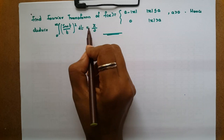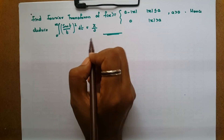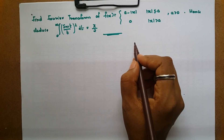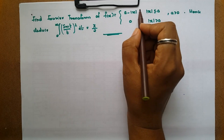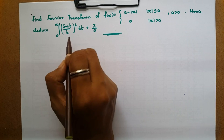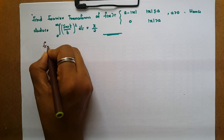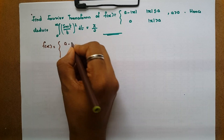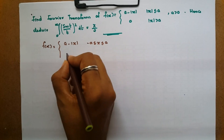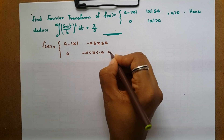This question asks to find the Fourier transform and then deduce. We call the Fourier transform F(λ). We will solve the two parts using the formula. f(x) = a - |x| for -a ≤ x ≤ a, and 0 for x outside [-a, a].